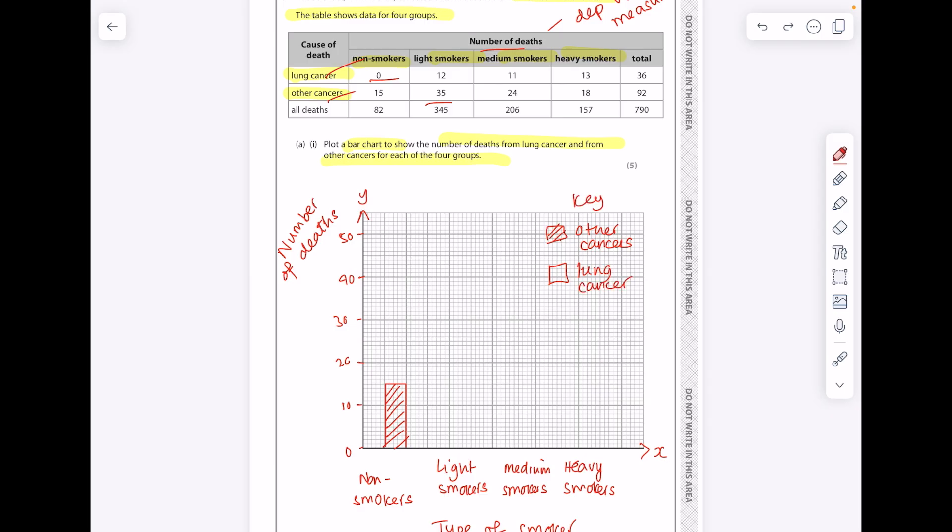Now we know for light smokers that 12 got lung cancer, whereas 35 got other cancers. I'm sure this is nice and accurate in the exam. My iPad's not lining up perfectly. Making sure that I'm representing my key correctly.